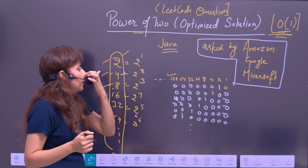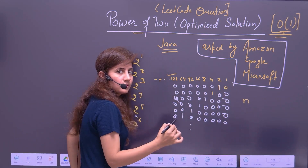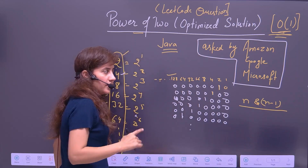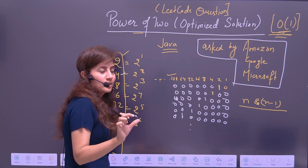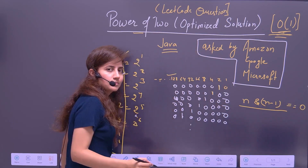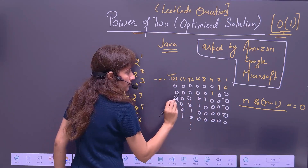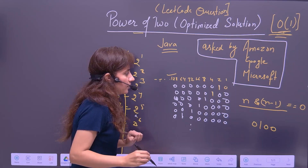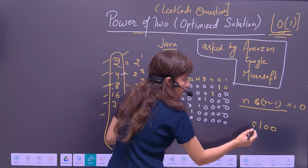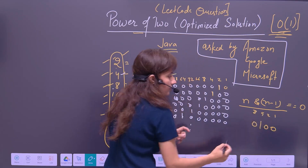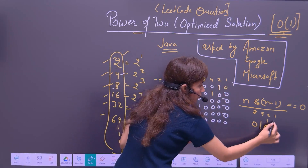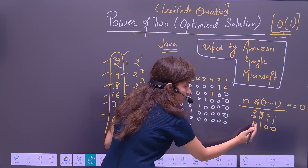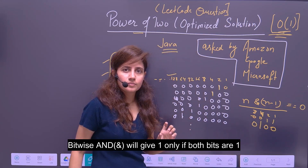Now, if you perform bitwise AND of n and n minus 1, and if the number is power of two, then definitely the answer would be 0. For example, if n is 4: 4 in binary is 0100, and n minus 1 is 3, which is 0011. So you will never get a 1 at the same position — you can only get 1 at the lower side bits for n minus 1.